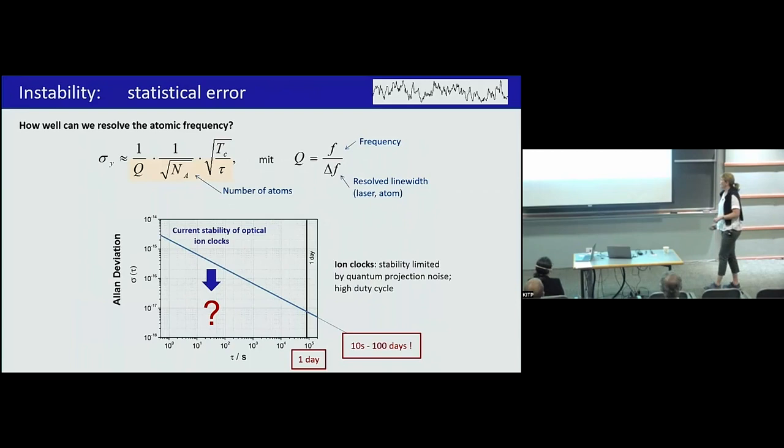This is really, when I moved to PTB, working on ions, I said, how can I improve that? What are the numbers here? The most natural thing is, you crank up the number of atoms. The other obvious choice is, you crank up the frequency. So with indium, we're already working at 230 nanometer, this is doable now with lasers.